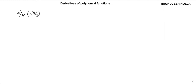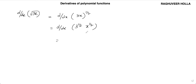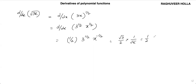Let us take this problem: d by dx of 3^(1/2)·x to the power of half. This will be 1 by 2 into 3 to the power of half, x to the power of minus 1 by 2. Or, you can write this as root 3 by 2 multiplied by 1 by root x, which gives root 3 by x.